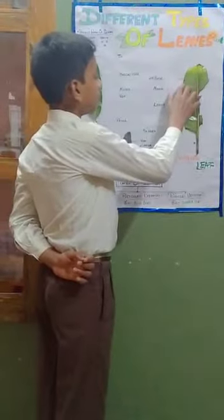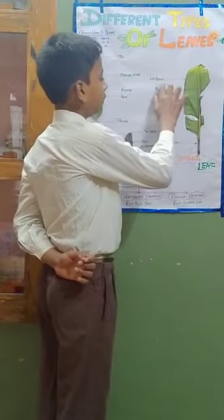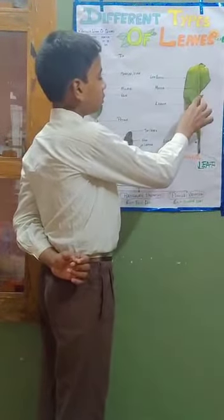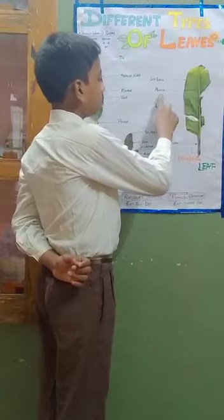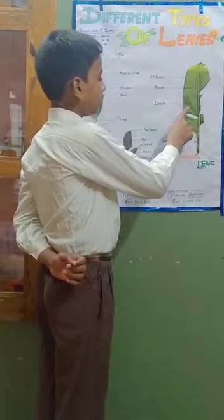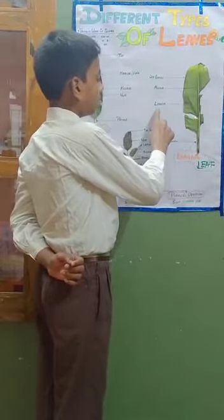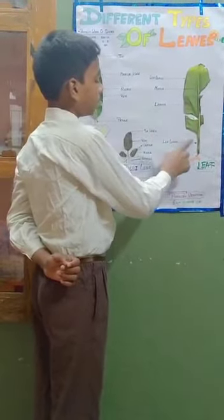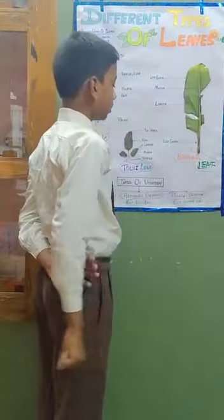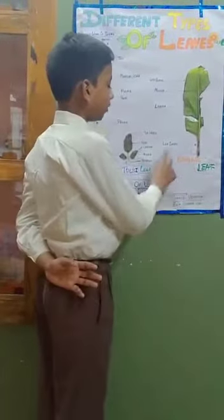Now the second, here we have the banana leaf. This part is denoted as a leaf blade. This part is denoted as a midrib. This part is denoted as a lamina. And the last part is denoted as a leaf stalk.